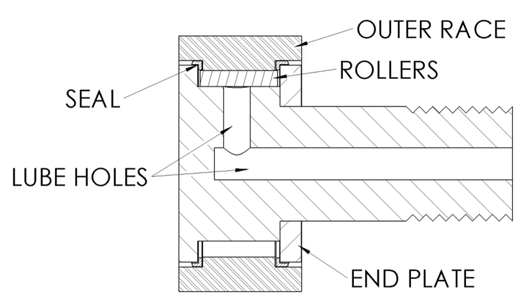A cam follower, also known as a track follower, is a specialized type of roller or needle bearing designed to follow cam lobe profiles.